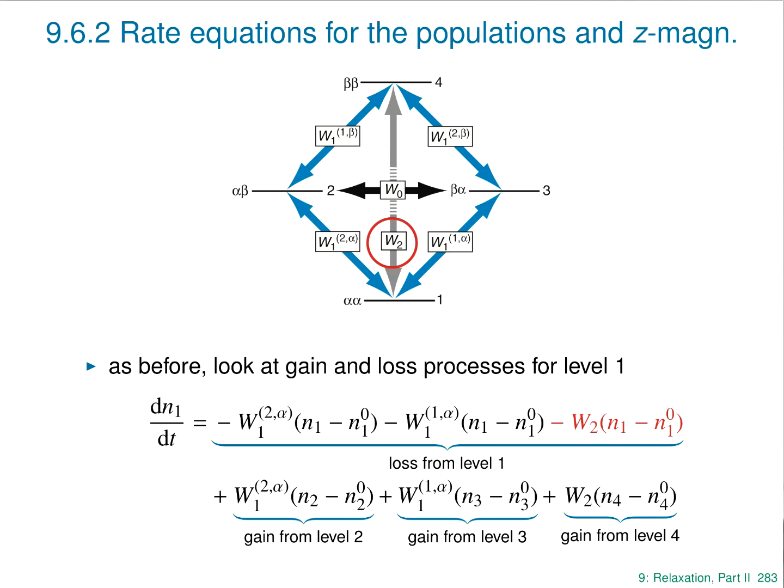For the processes coming the other way — the green term takes population from level 2 down to level 1, which is a positive term proportional to the relevant rate constant and to N2 minus N2-equilibrium. Likewise, there's a gain term from level 3 proportional to N3 minus N3-equilibrium, and a gain term proportional to N4 minus N4-equilibrium. You could write one of these differential equations for every level — 1, 2, 3, and 4 — by looking at the network and working out gain and loss mechanisms.